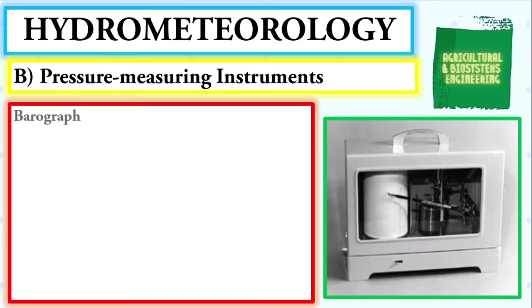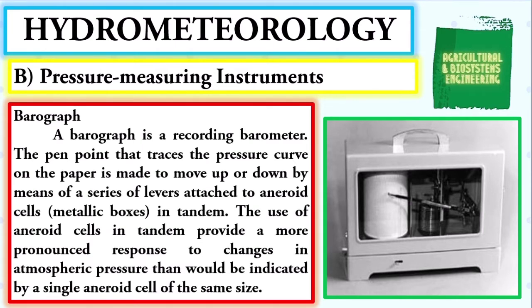Next, the barograph — a recording barometer. The pen point that traces the pressure curve on the paper is made to move up or down by means of a series of levers attached to aneroid cells, which are metallic boxes in tandem. The use of aneroid cells in tandem provides a more pronounced response to changes in atmospheric pressure than would be indicated by a single aneroid cell of the same size.